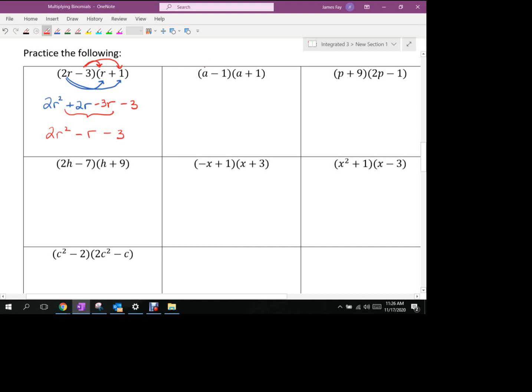Do this one with me. What's a times a? A squared. What's a times 1? A. So now what is negative 1 times a? Negative a. And what's negative 1 times positive 1? Negative 1. What happens to these two things right there? They cancel. So it leaves me a squared minus 1. If you want to write that as a squared plus 0a minus 1, there's nothing wrong with that. It is correct. I think MathXL will probably balk at that. They're going to look for that one.